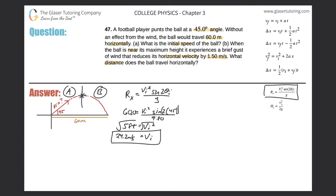Since I now know the initial velocity, I can find its components. The initial velocity in the x-direction equals the resultant initial velocity multiplied by cosine of theta, where theta is measured from the x-axis. So v_ix equals 24.2 times cosine of 45 degrees.